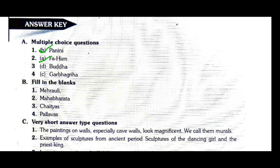Question number three: The paintings at Ajanta and Ellora caves depict scenes from the life of Buddha — option D, Buddha. Question four: The ideal of the chief deity was placed at the temple's Garbhagriha — answer is option B, Garbhagriha.